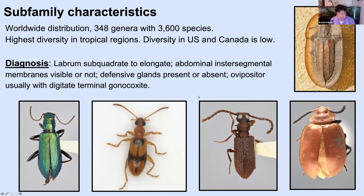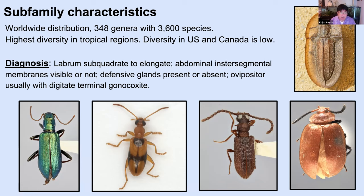We talked about the Freenapatini yesterday — Pat covered that subfamily. Today I'm going to cover the Lagreini. The Lagreini is much more diverse than the Freenapatini; there are roughly 348 genera with 3,600 species globally distributed. Although they're super diverse in the tropics, the diversity in the US and Canada is very, very low. I'm going to introduce you to the global diversity of this subfamily. Their diagnosis isn't too different from that for the Lagreoid branch overall.